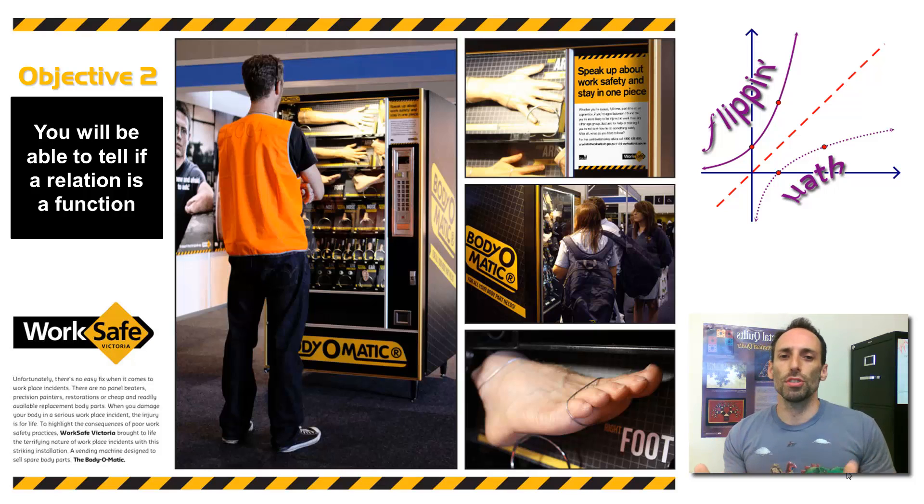This picture is from some sort of work safety campaign in Canada. I've worked at factories before. Sometimes it can be pretty dangerous, and they really want you to be safe because you can lose a finger, you could lose an eye, whatever. This is really hitting at home that here you are in your break room and one of the vending machines is a replacement arm, hand, foot, whatever.